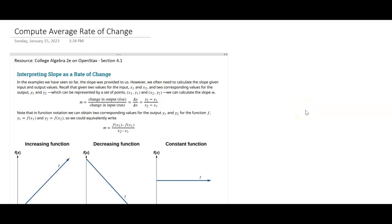This video will go over how to compute average rate of change, which is the same thing as slope between two points. Slope is the change in y over the change in x, and we can write this as y2 minus y1 over x2 minus x1.